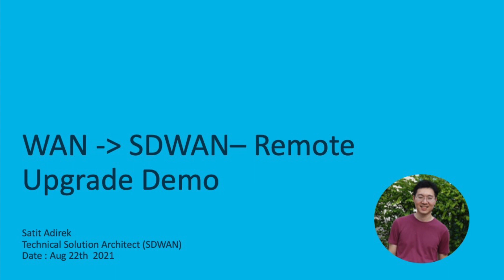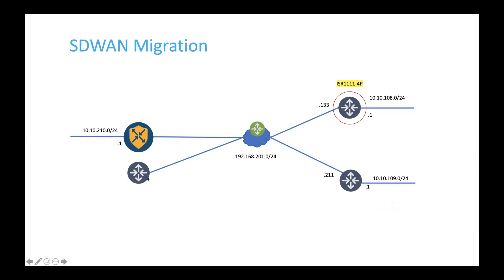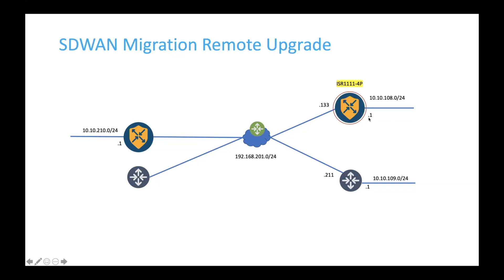Let's first take a look at the diagram. We have the traditional WAN router sitting at the hub and two branches that have not yet migrated to the SD-WAN. The first thing we need to do is migrate the head-end router, which is already on SD-WAN. Then we need to migrate the branches from the traditional WAN to the SD-WAN infrastructure. We want to do everything remotely, so once we change a branch to the SD-WAN router it should automatically establish the tunnel and start sending traffic to the SD-WAN hub.